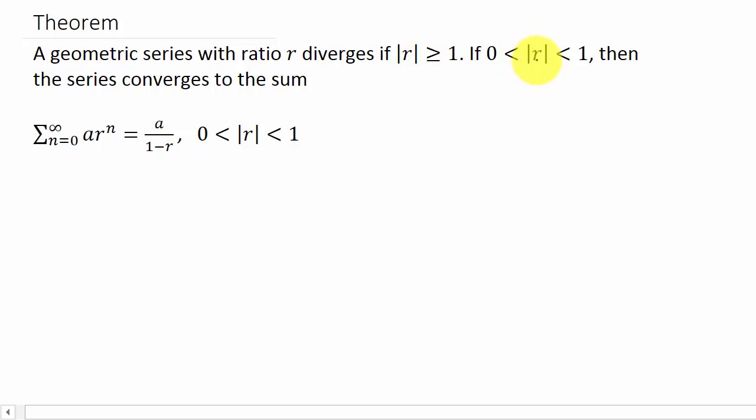And if the absolute value of R is between zero and one, then the series converges and it converges to the sum of a over one minus R.